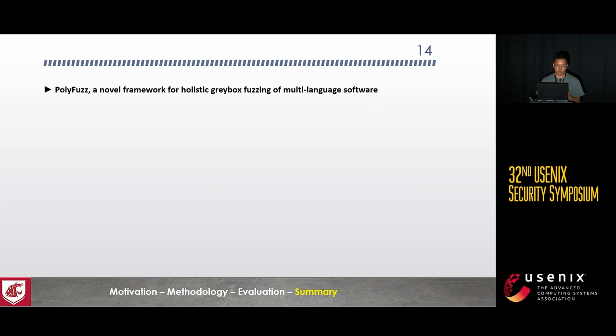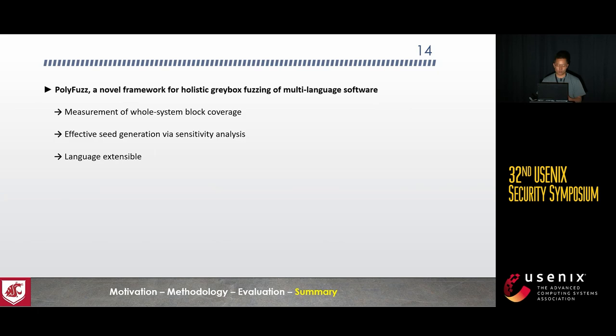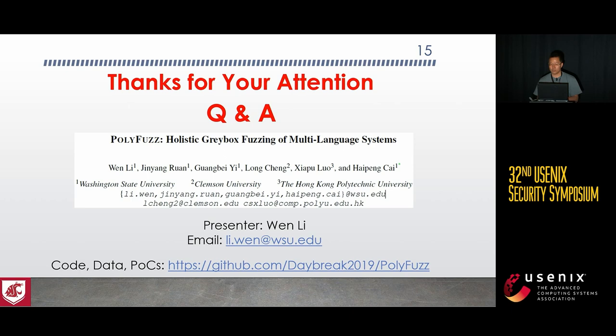In summary, PolyFast is a novel framework for holistic grey-box fuzzing of multi-language software. It measures whole-system branch coverage and generates effective inputs with sensitivity analysis. In addition to its powerful capabilities, it is also designed to be language-extensible to support different languages. That's all, and thanks for your attention. I will now answer any questions.